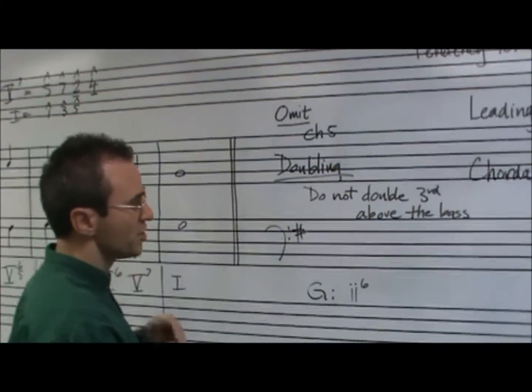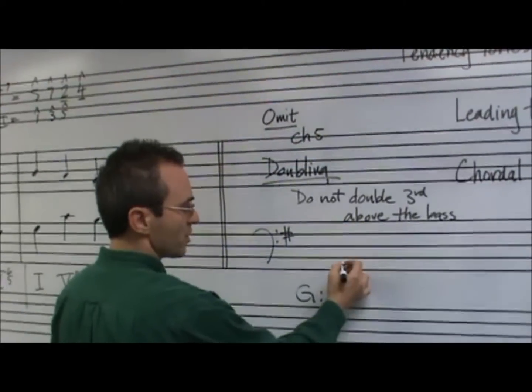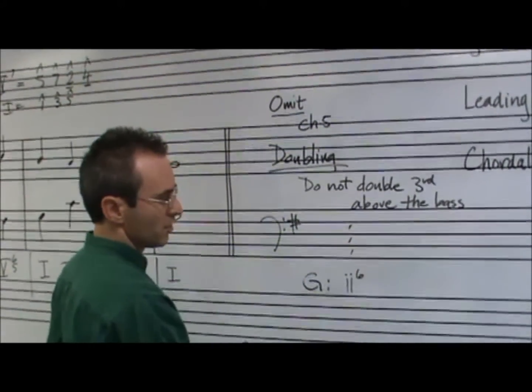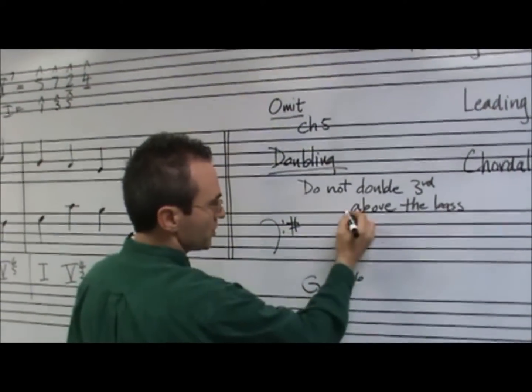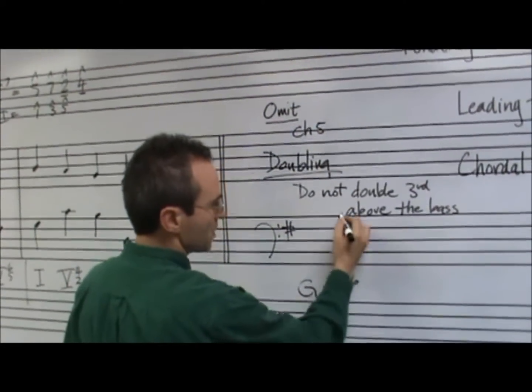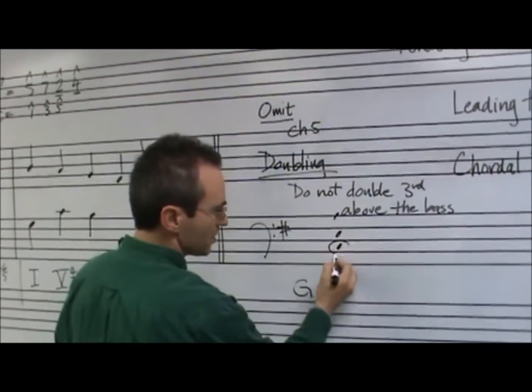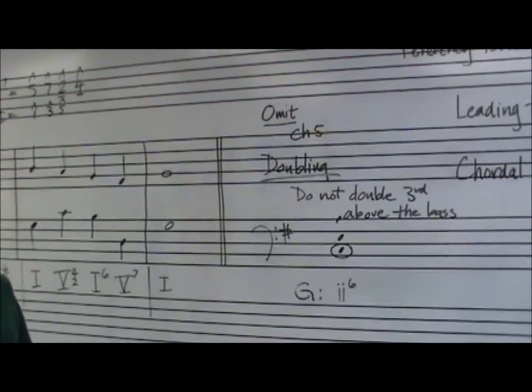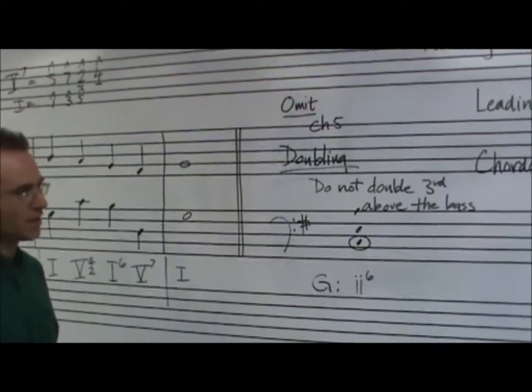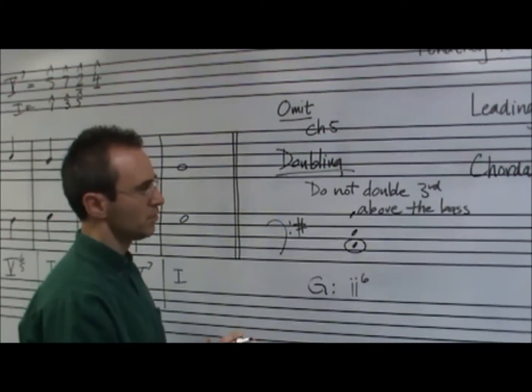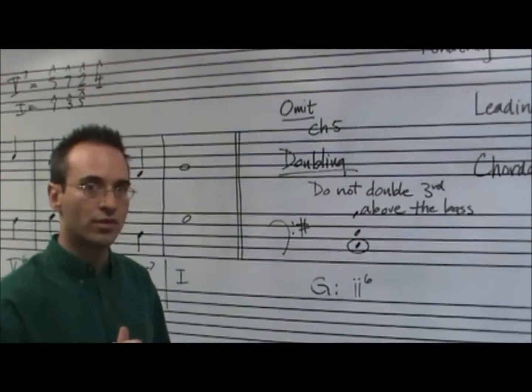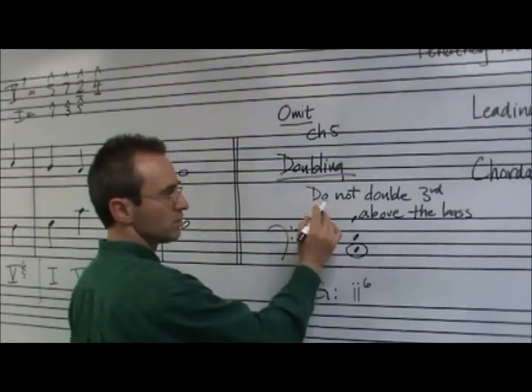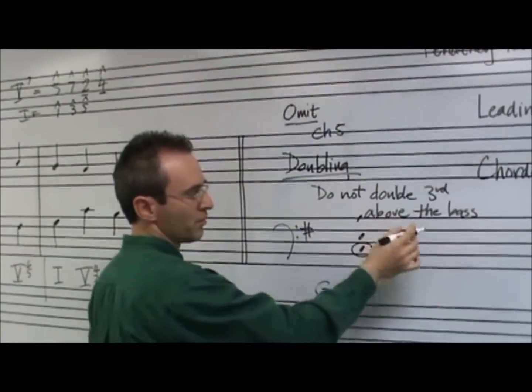And what you're doing is putting it in first inversion, and scale degree four is the note that gets doubled all the time. So scratch that idea that you should be doubling the chordal third, and change that to be, don't double the third above the bass.